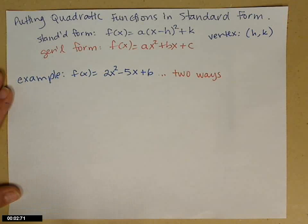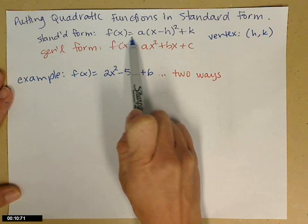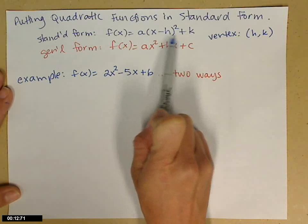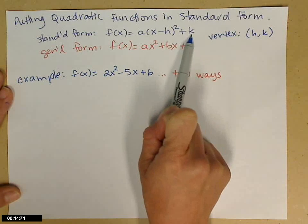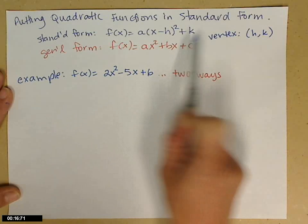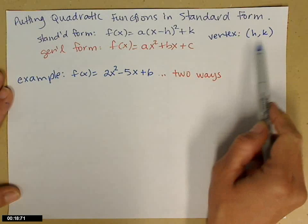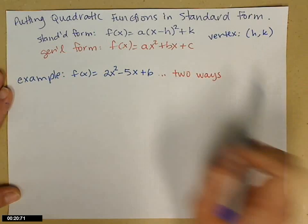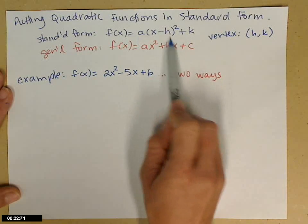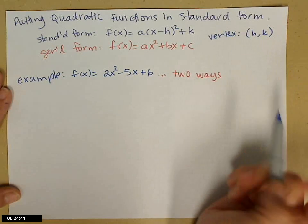Let's take a look at how we put a quadratic function into standard form if our leading coefficient is not 1. Standard form is f(x) equals a times the quantity x minus h squared plus k. We call this the standard form because we can read off the vertex. The general form, if this is all multiplied out, is ax squared plus bx plus c.